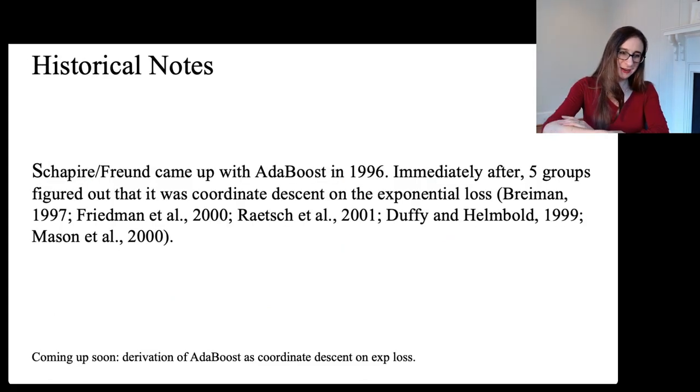So, just some historical notes. So, Freund and Schapire came up with AdaBoost in 1996. Immediately after they published it, five different groups of scientists figured out that AdaBoost was simply coordinate descent on the exponential loss. And so, that interpretation makes it very easy to derive things like the formula for alpha in terms of the error rate. And so, that's why I'm going to derive AdaBoost's whole formulation through the coordinate descent derivation. So, yeah, I will be doing that soon. Thank you.